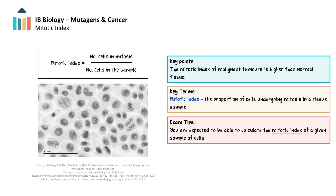To better evaluate and differentiate between tumour types, one useful measure is the mitotic index. This index indicates the proportion of cells undergoing mitosis in a sample of tissue. Malignant tumours generally exhibit a higher mitotic index when compared to normal tissue, reflecting their increased cell proliferation. The mitotic index is calculated by counting the number of cells in mitosis and dividing this by the total number of cells in the sample. To identify cells undergoing mitosis, we can look for key characteristics of the different stages, for example chromosomes aligned along the metaphase plate, as seen during metaphase.